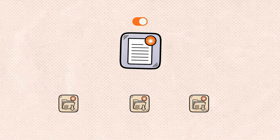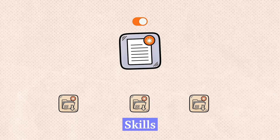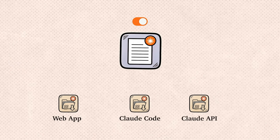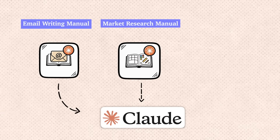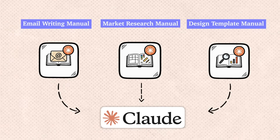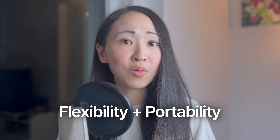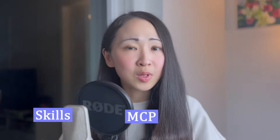Instead of embedding all these workflow instructions and resources inside a project, you extract them out and package them into what they call Skills, and make them available at the account level — including the web app, Claude Code, or the Claude API. Once you understand this, you can have so many kinds of reusable menus: perhaps an email writing menu, market research menu, design template menu — and they can all be used together. That is why this is a game changer, giving you far more flexibility and portability for your workflow or agent design.